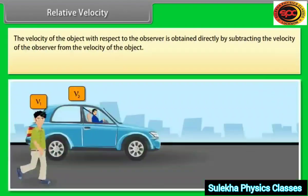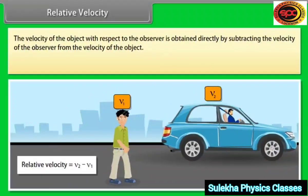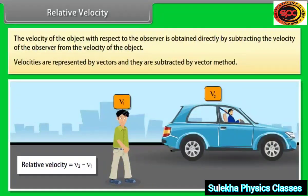The velocity of the object with respect to the observer is obtained directly by subtracting the velocity of the observer from the velocity of the object. Velocities are represented by vectors and they are subtracted by vector method.